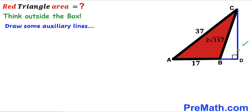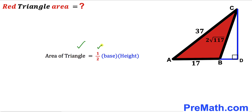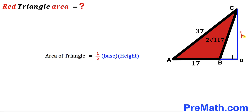As you can see in this next step, we have created this blue right triangle BDC such that side BC is the hypotenuse of this blue triangle. Since we are interested in calculating the area of the red triangle ABC, let's recall the area of a triangle formula: area equals one half times base times height. In our case the base of the red triangle ABC is side AB and the height is CD. Let me label this height as lowercase h — we know the base is 17 units. So our task now is to calculate the height of this triangle.